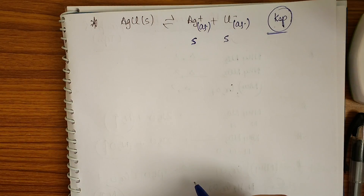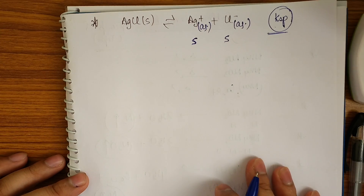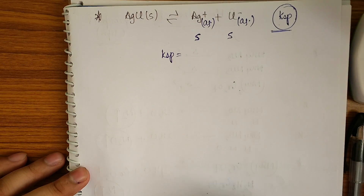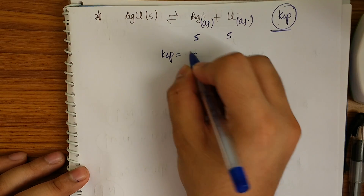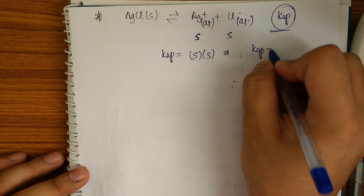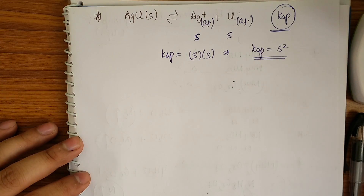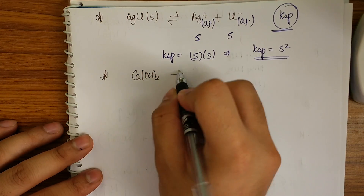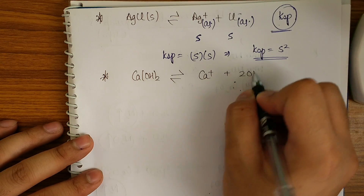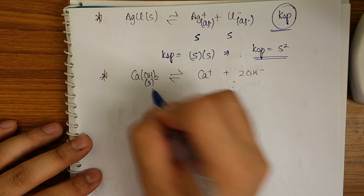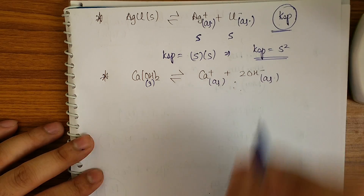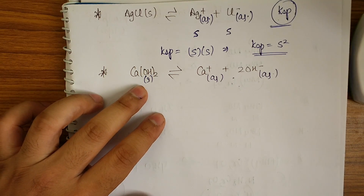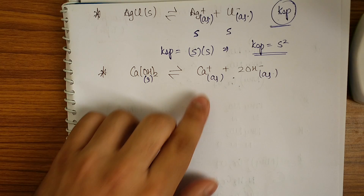Ions must exist in aqueous form to be stable. If the solubility of Ag⁺ is s, then both Ag⁺ and Cl⁻ have concentration s (since it's a 1:1 compound). Applying the Ksp expression: Ksp = s × s = s².